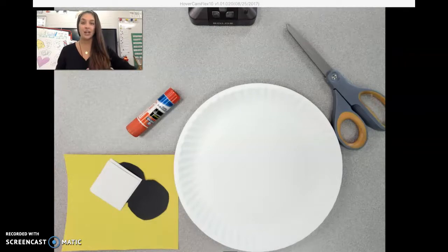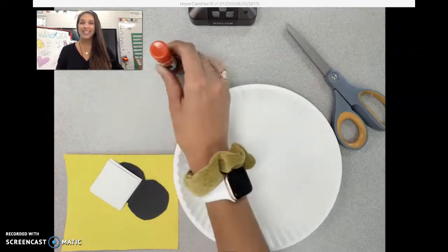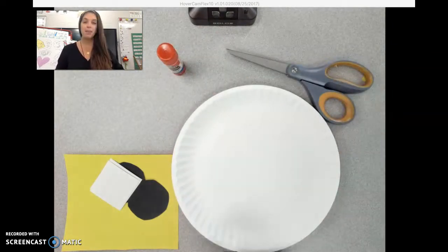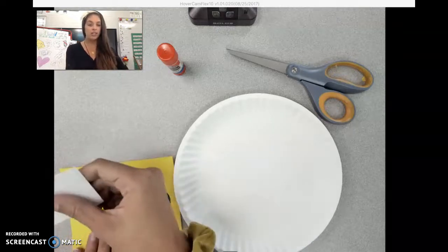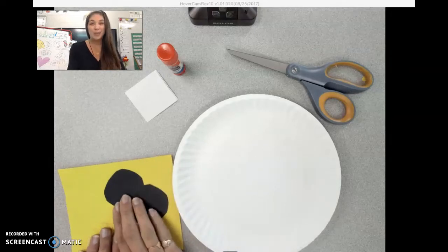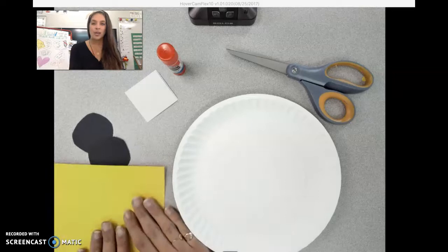Here is what you need: a glue stick (it could be a glue bottle too, but I like to use a glue stick), scissors, a paper plate, and some white paper if you want (you will see why later). Some black paper - yours probably isn't cut yet and that's okay - and some yellow paper.